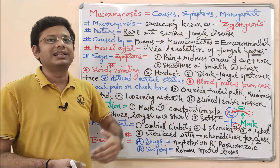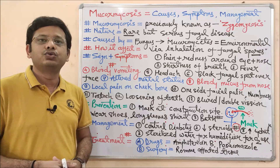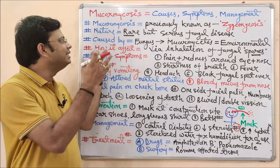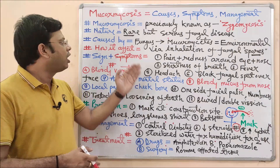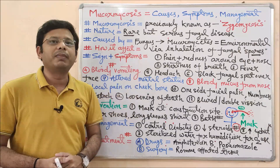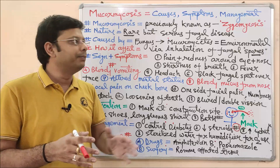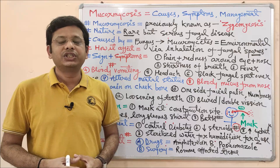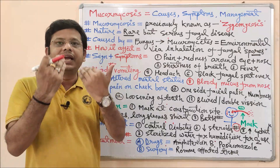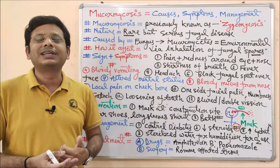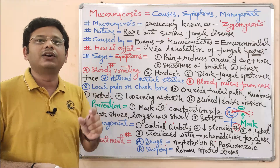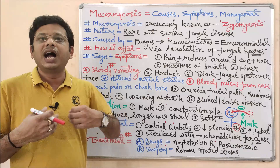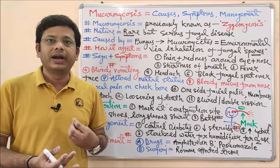Mucormycosis is a fungal disease caused by a fungus that is already present in our atmosphere. Whenever a person is exposed to atmospheric conditions, there is a chance of inhaling the fungus into the respiratory system. Once the causative agent — the mold or fungus — enters inside our body, it starts producing its undesirable effects.